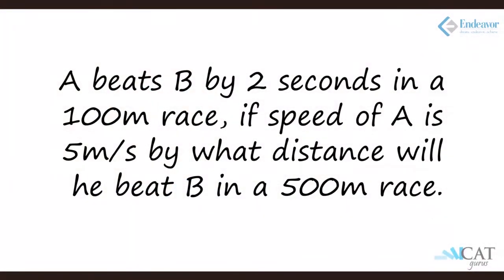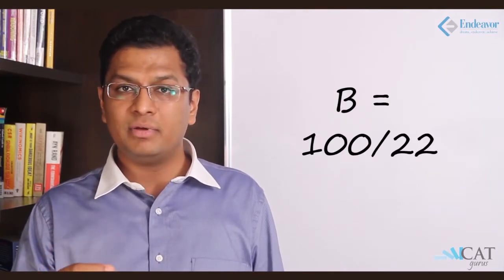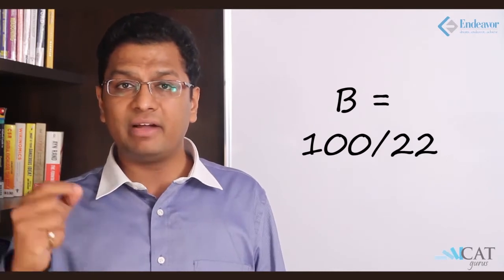Let us look at a question. A beats B by 2 seconds in a 100 meter race. If the speed of A is 5 meters per second, by what distance will he beat B in a 500 meter race? Now we don't know the speed of B but we know the speed of A. So the time taken by A in that 100 meter race will be 100 upon 5 which is 20 seconds. So B will take 2 seconds more which is 22 seconds. So the speed of B is 100 upon 22.